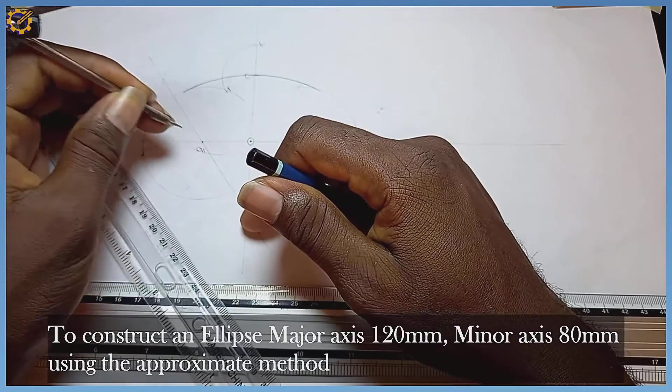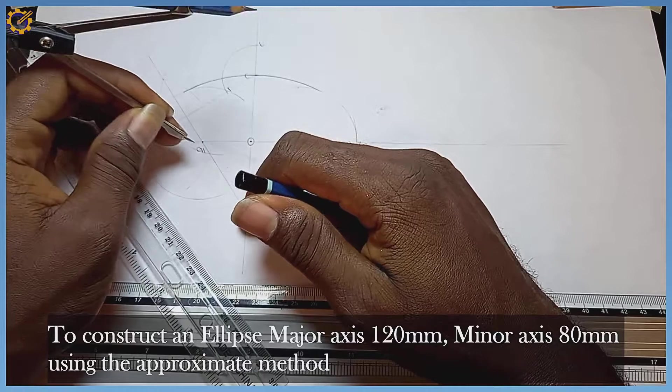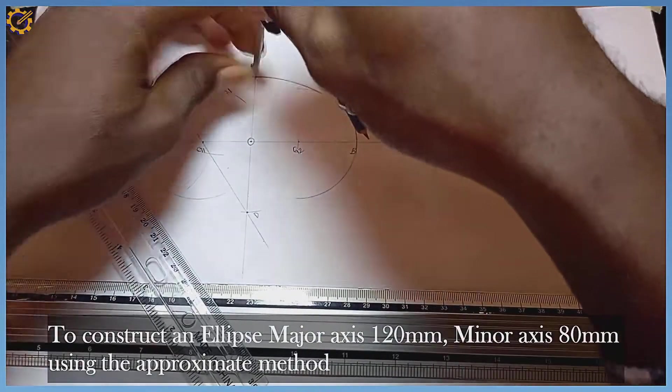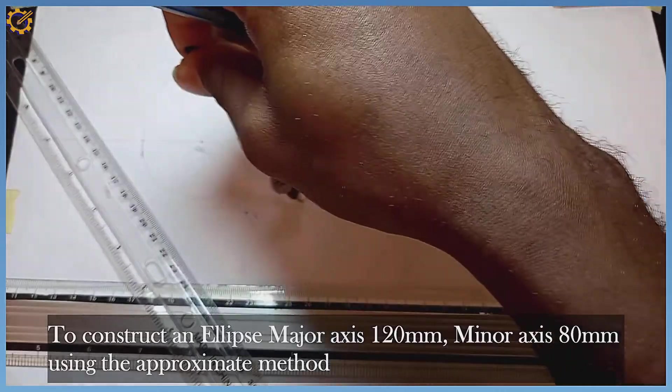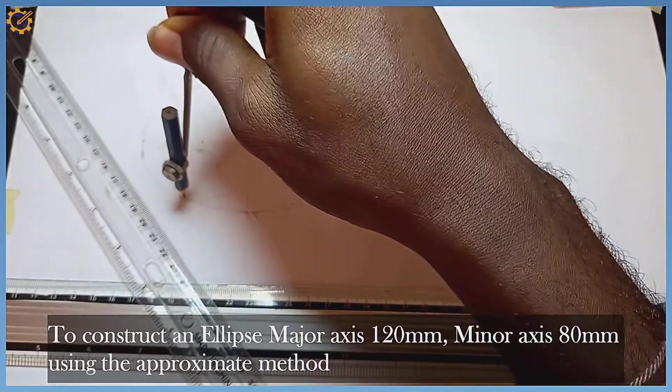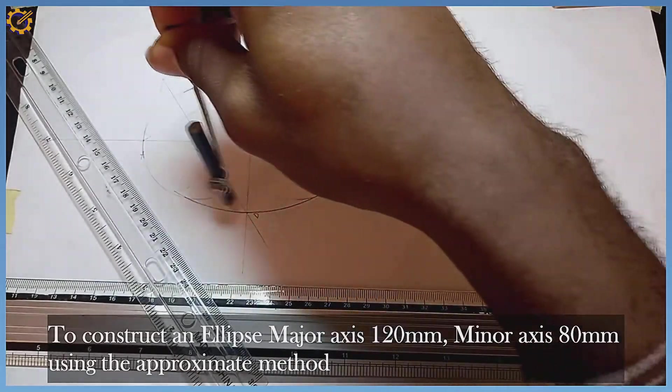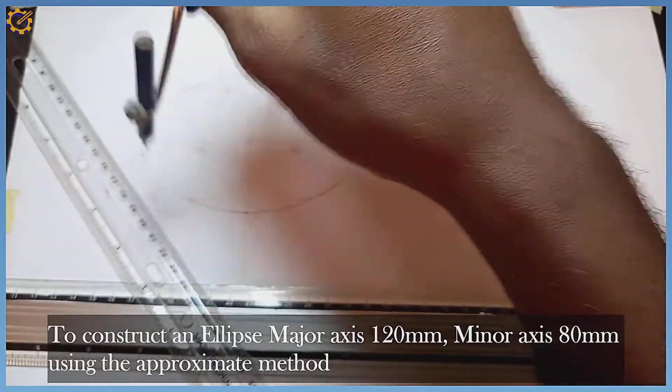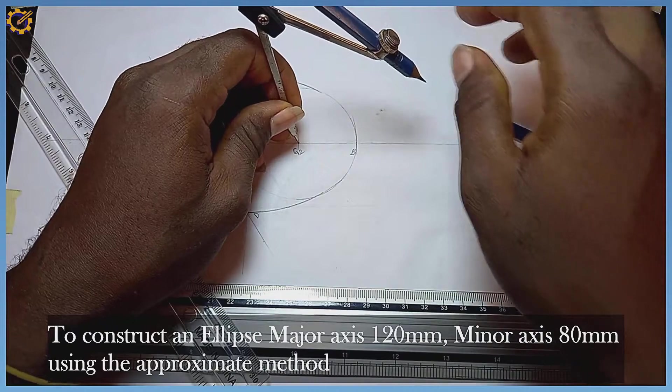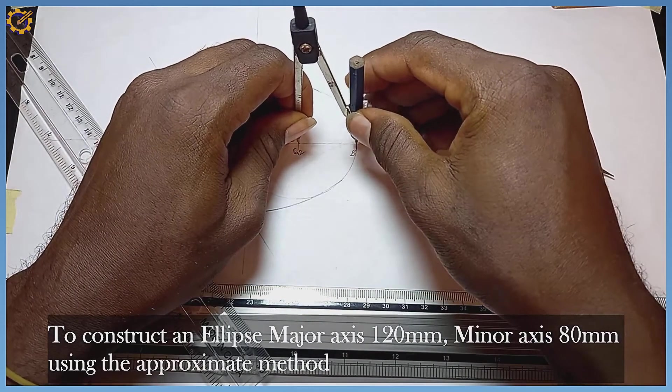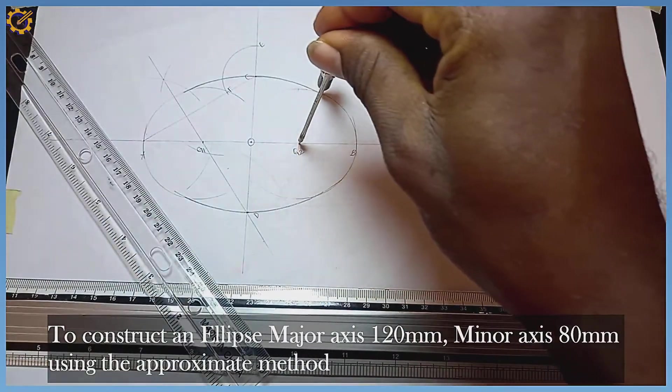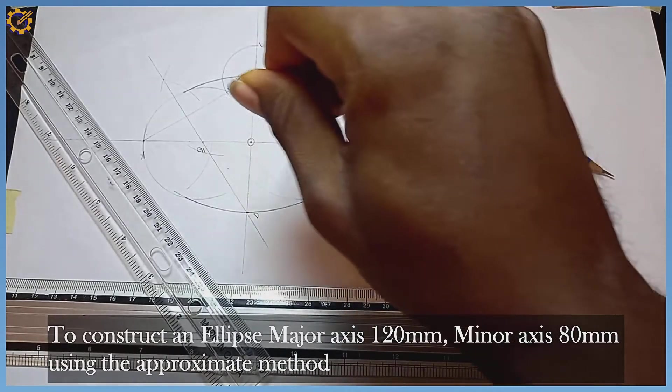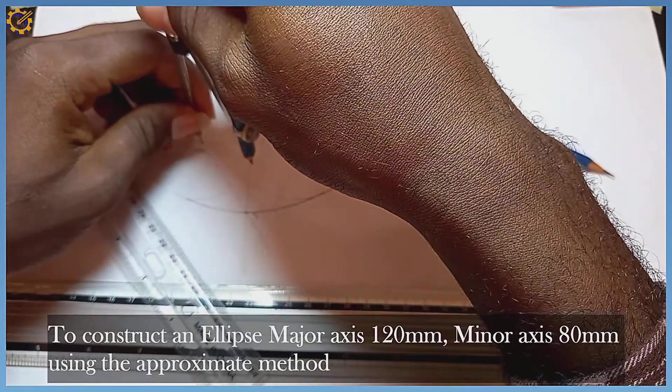Since this one touches the vertical line at mark D, then automatically replicating it, it's going to be on mark C. With that same radius, I draw. I can now thicken out the rest of my ellipse.